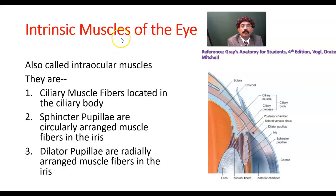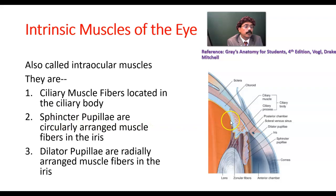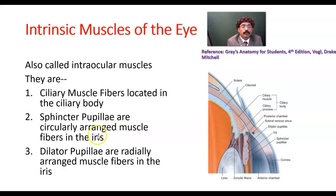The intrinsic muscles of the eye are also called intraocular muscles because these muscles are present inside the eyeball. These muscles are the ciliary muscles. The fibers of the ciliary muscles are located in the ciliary body. This is the ciliary body and this is the ciliary muscle fibers. Sphincter pupillae — the muscle fibers are circularly or concentrically arranged, and this muscle is found in the iris. This is the sphincter pupillae muscle.